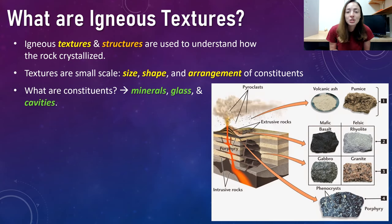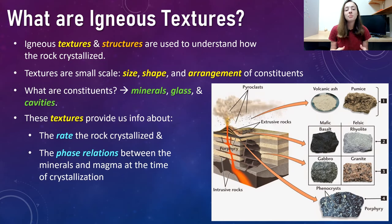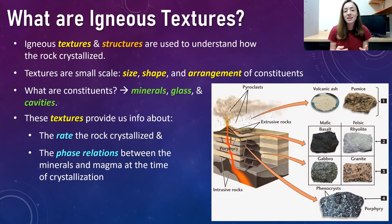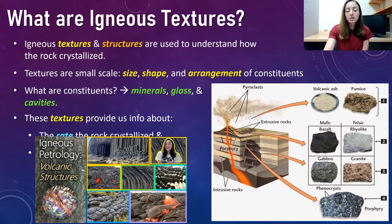But what does constituents mean? Well, that just means the minerals, glass, and cavities contained within that igneous rock. Textures provide information about the rate the rock crystallized, as well as the phase relations between the minerals and the magma at the time of crystallization. This video is all about recognizing igneous textures and how those textures formed.